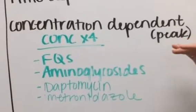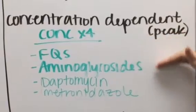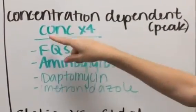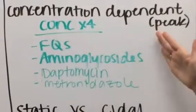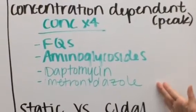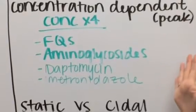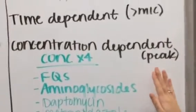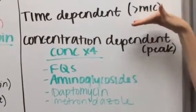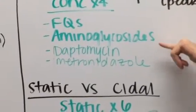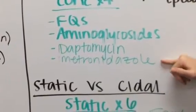And so how I like to think about it are just the concentration dependent ones, and I put CONC times four because there's four letters in CONC and there's also four different types of medications that are concentration dependent. Those that aren't concentration dependent are going to fall into that time dependent. So if you can just remember these ones, then you can think the ones that don't fall here are going to fall up here. We have our fluoroquinolones, our aminoglycosides, our daptomycin, and then our metronidazole.